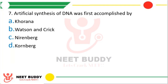Question 7: The artificial synthesis of DNA was first accomplished by? Option A: Khorana. Option B: Watson and Crick. Option C: Nirenberg. Option D: Kornberg. The correct answer is Option D, Kornberg.